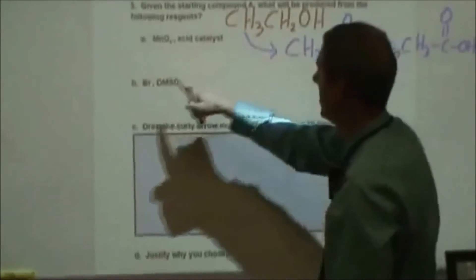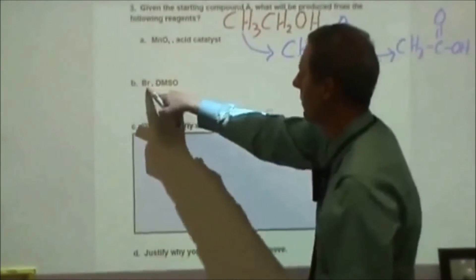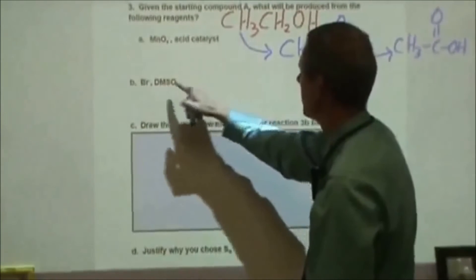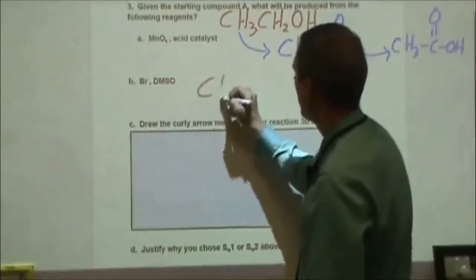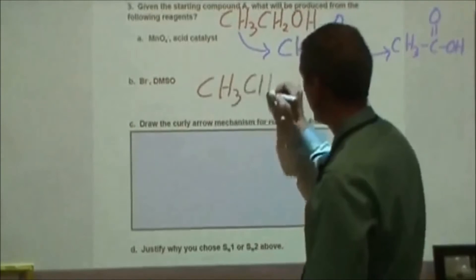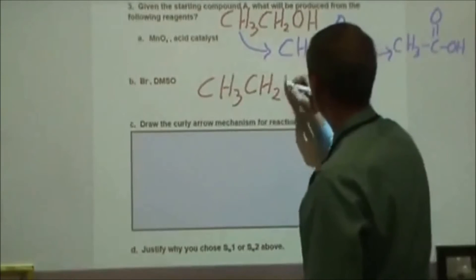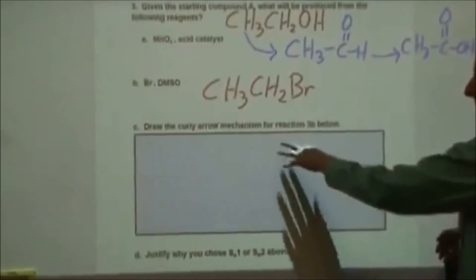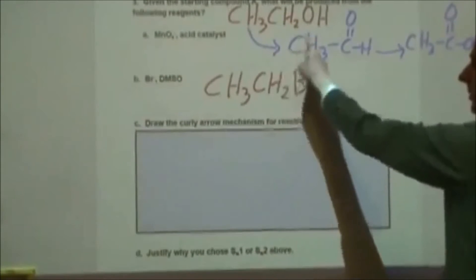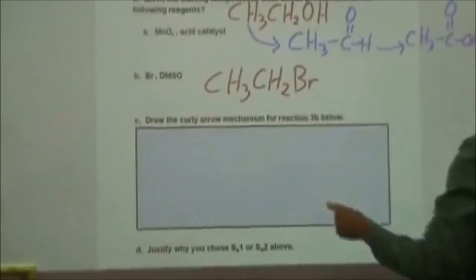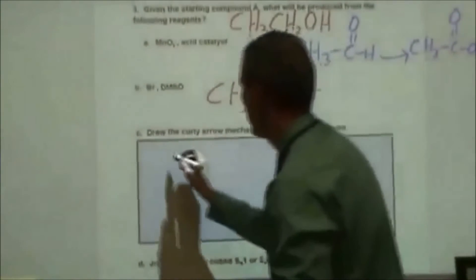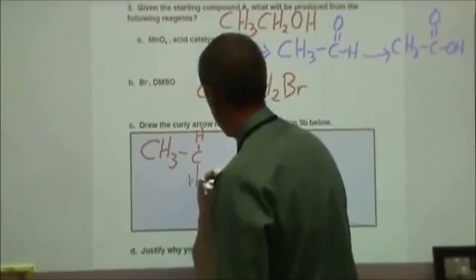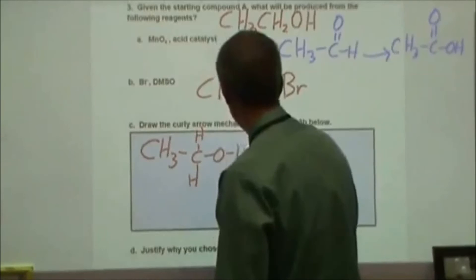The second reaction takes ethanol and reacts it with a bromide ion from either a salt or an acid in a polar aprotic solvent, so we're going to end up with a substitution reaction. The bromide is going to substitute out the hydroxide and we end up with bromoethane. In part C it says draw the curly arrow mechanism for this conversion, so let's go ahead and start with our ethanol and show how that transformation takes place, including all of our electrons.